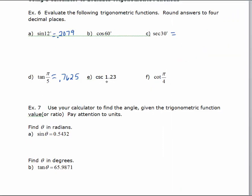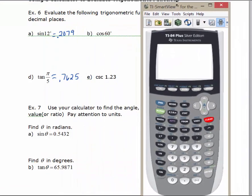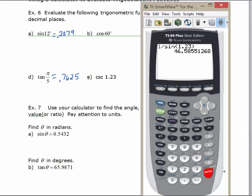Now let's evaluate the cosecant of 1.23. We assume that's in radians since no degree symbol is written. We know cosecant is 1 over the sine. You can either evaluate sine(1.23) and hit the x⁻¹ key, or type 1 divided by sine(1.23). Keeping 4 decimal places, the answer is 46.5855.